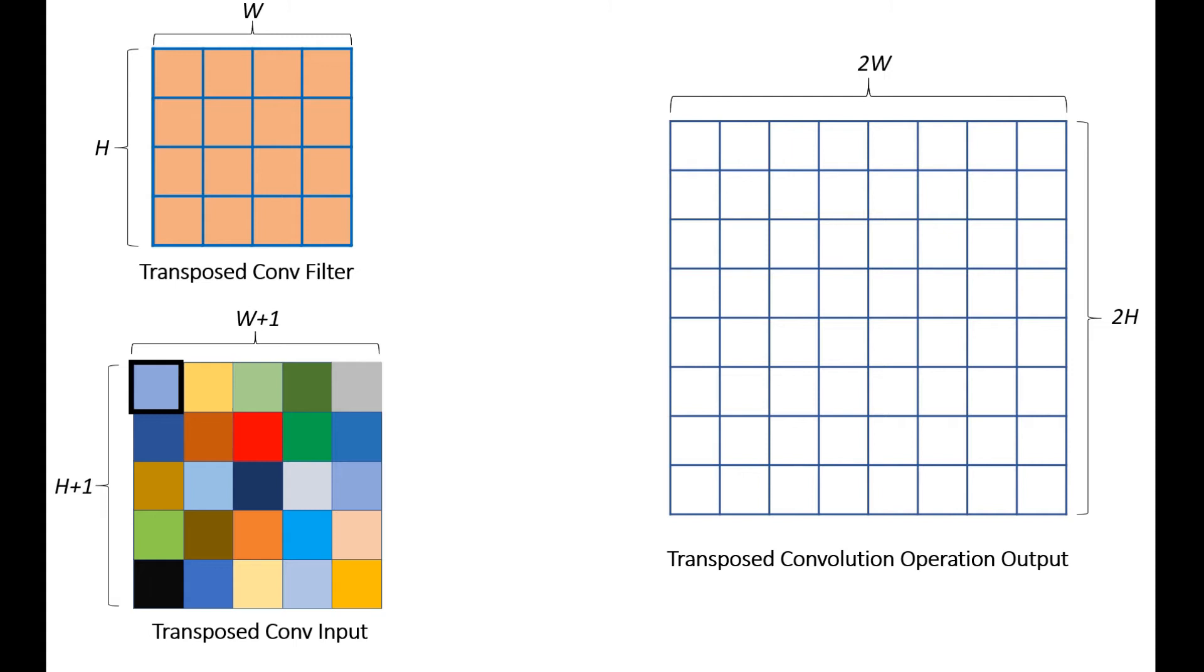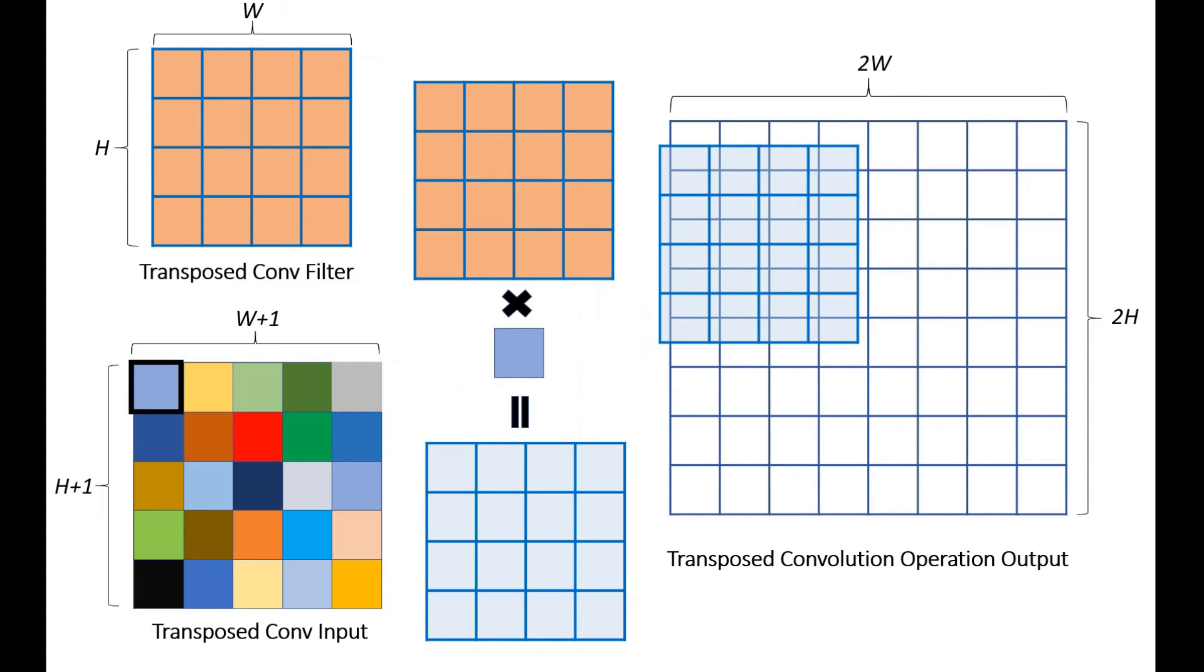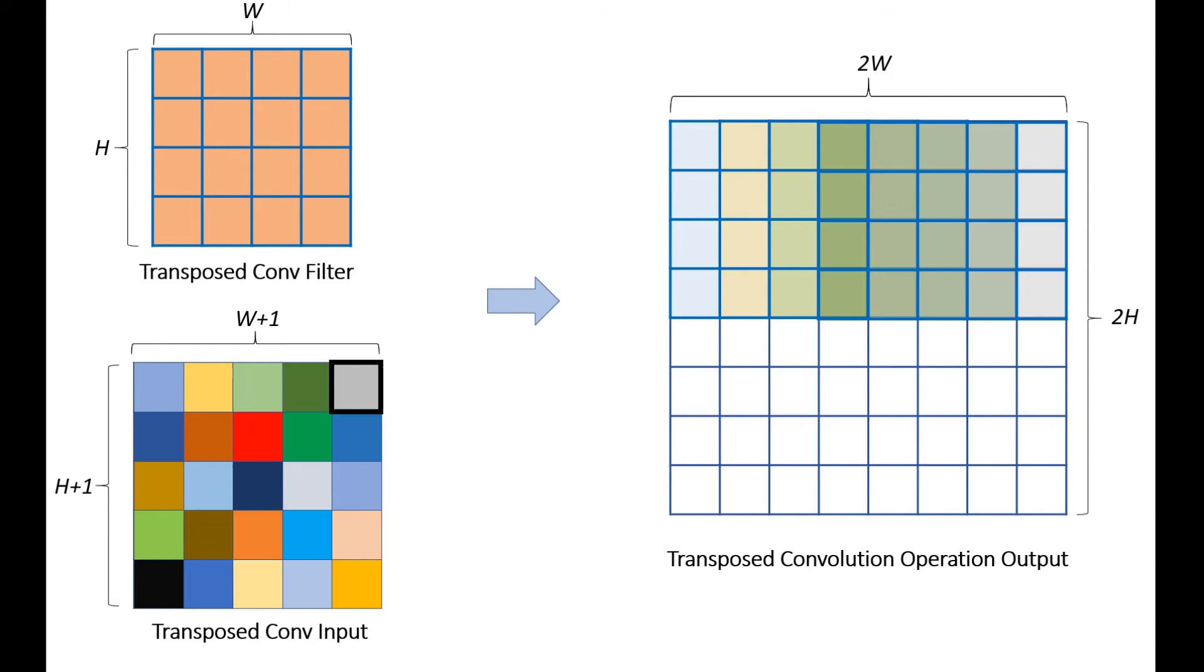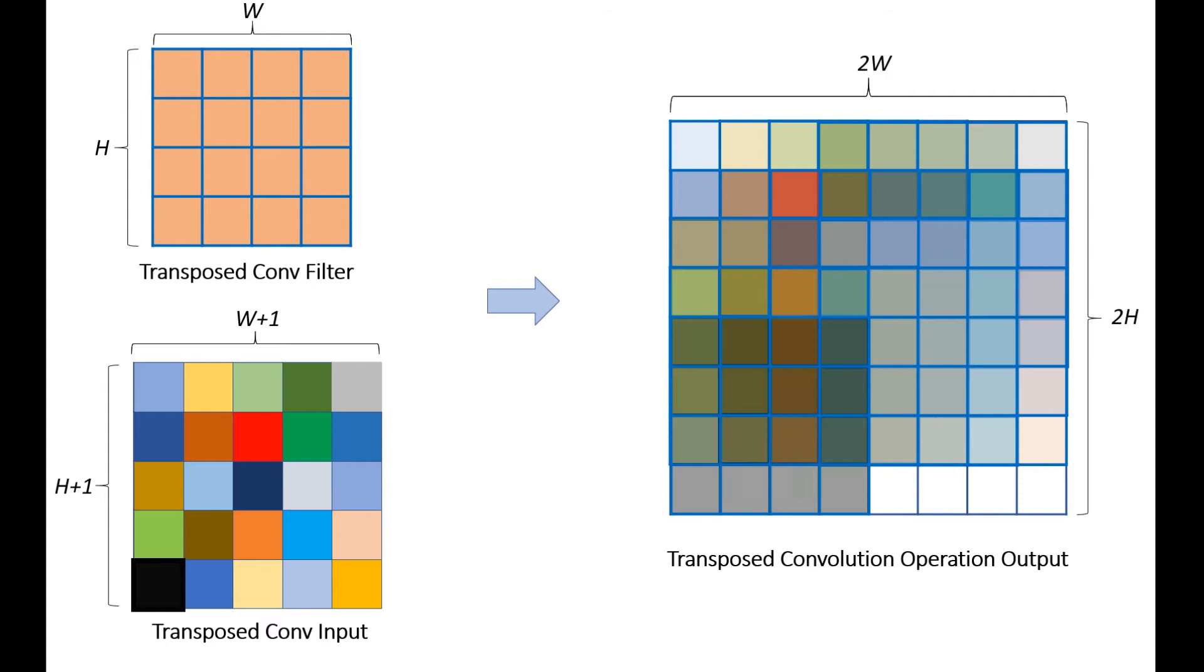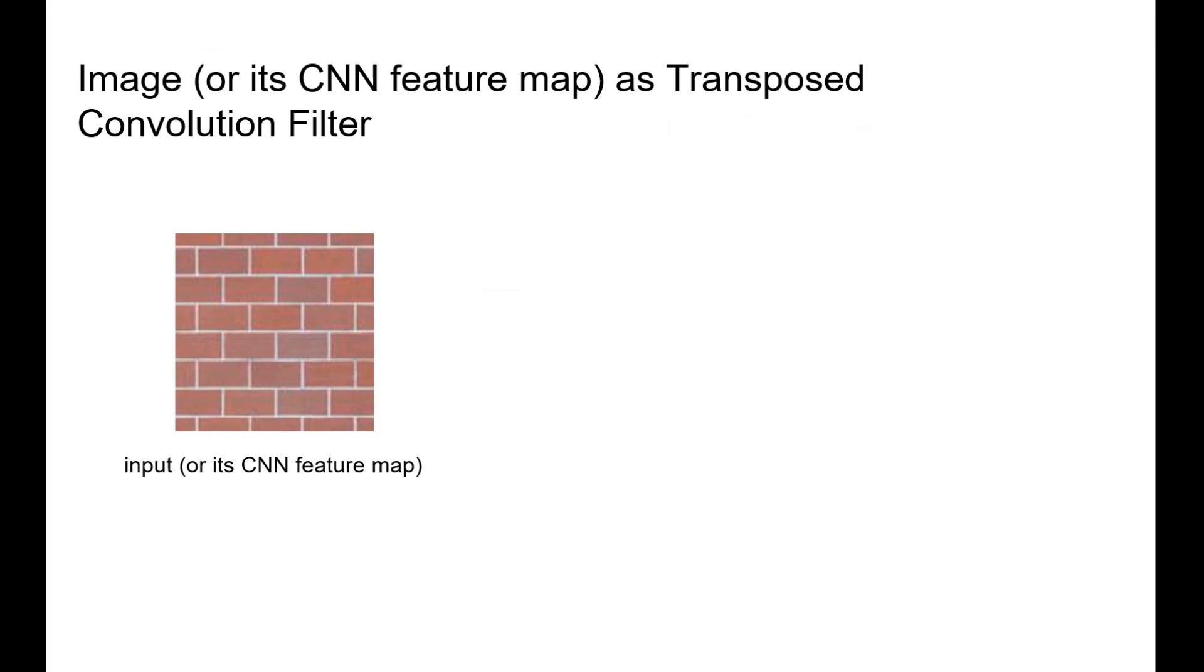In general, the transposed convolution operation will clone a copy of the filter and reweight this copy with the point's value in the input. The reweighted copy will be pasted into the output grid. We repeat the process for every point in the transposed convolution input. These reweighted copies are assembled to get the final texture synthesis output. The output can be regarded as the assembling of the transposed convolution filters, guided by the input.